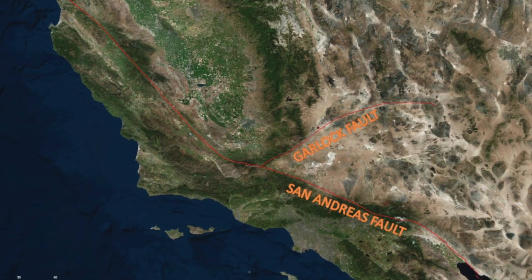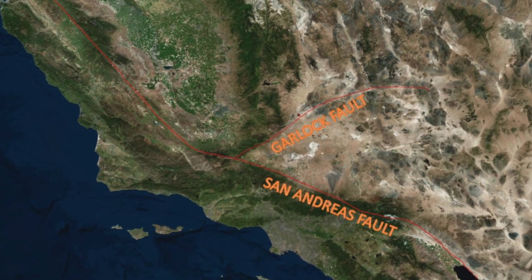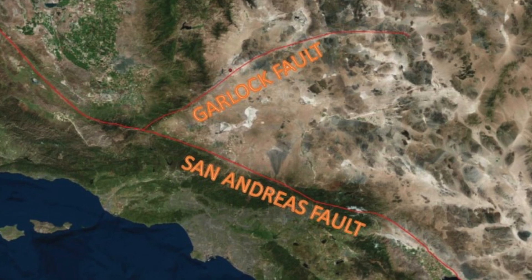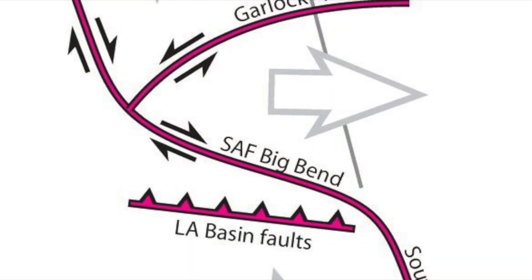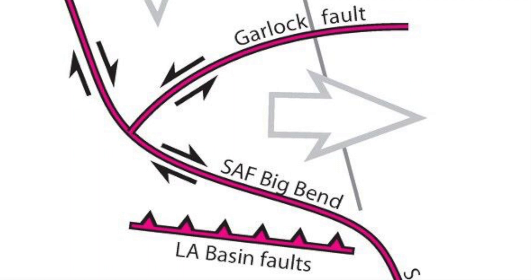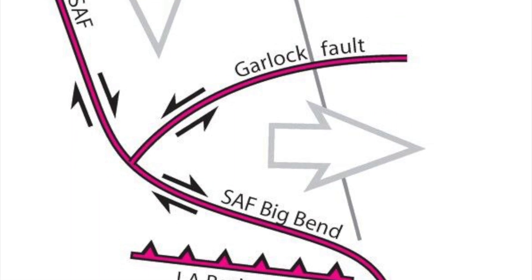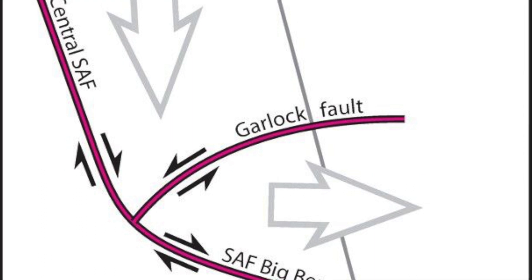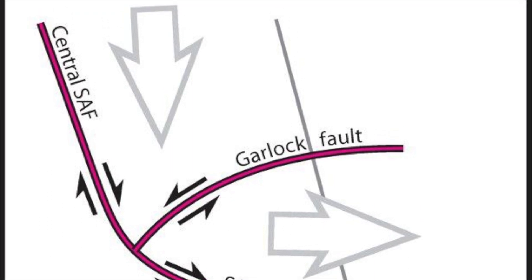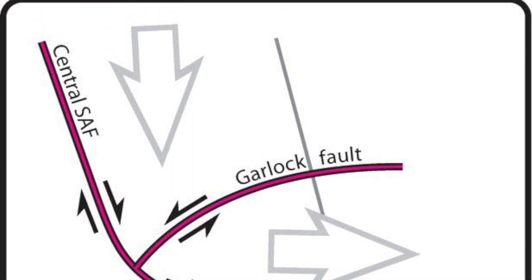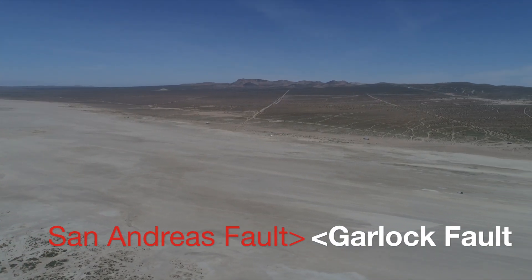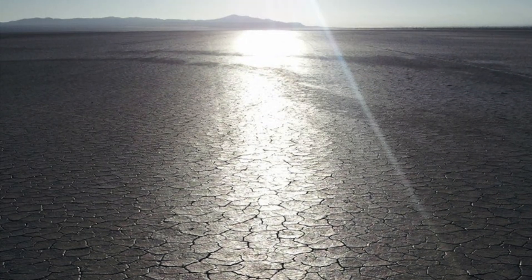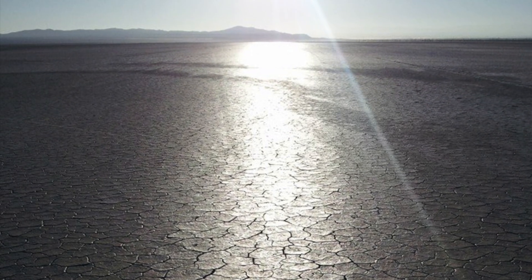The El Mirage Dry Lakebed was formed due to the movement of two faults located nearby. The San Andreas, a right lateral strike slip fault, meaning the motion of the movement opposite from your position moves from left to right. The Garlock Fault, which is a left lateral strike slip fault, has the opposite movement. The combined movement from both faults has resulted in the land being stretched, creating a zone that is relatively flat and free of other features.